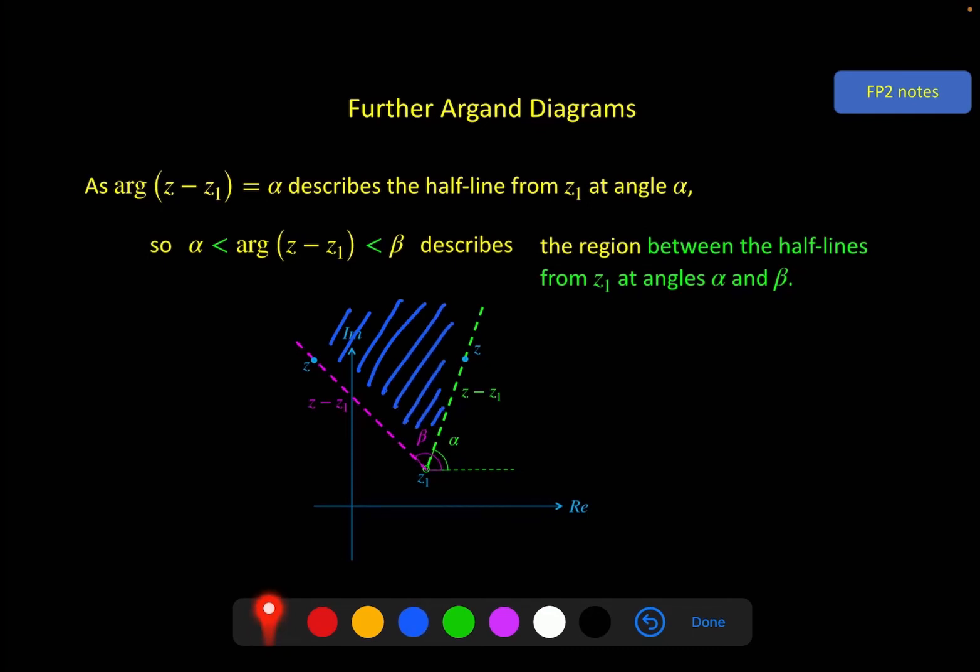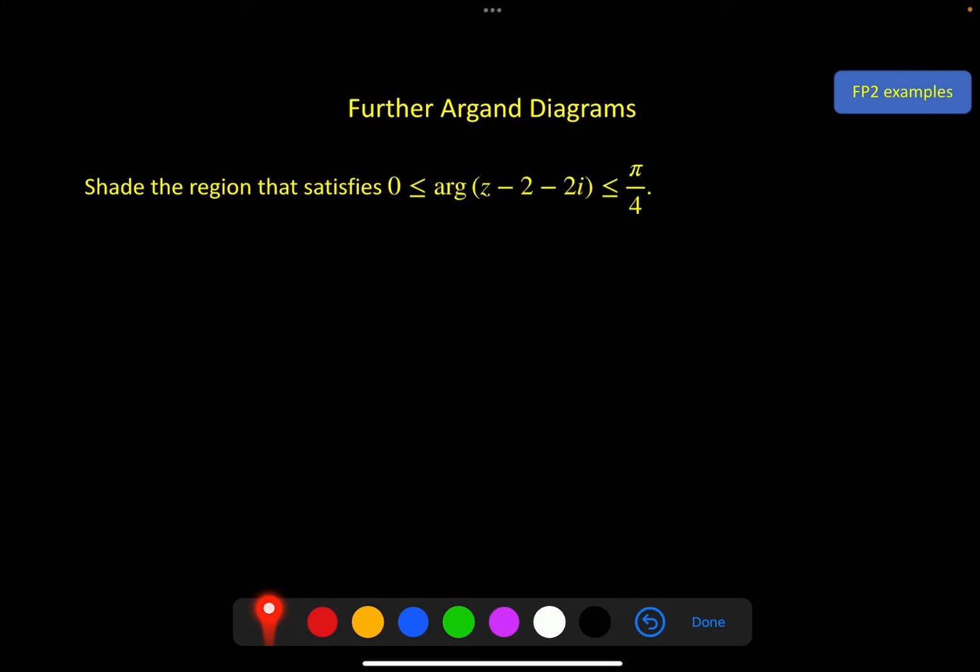And again, if you wanted to include either of these lines, you would have to put a little equal line and change it to a solid line rather than a dashed line. Quick example. Shade the region that satisfies this. So this is giving us our point, 2 plus 2i. Open circle. And then our two boundary lines. Here we can see it must be greater than zero, which of course is just parallel to the real axis, and it must be a solid line because of the equals here.